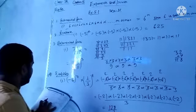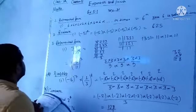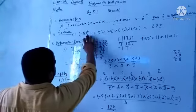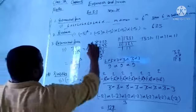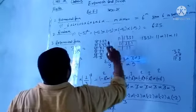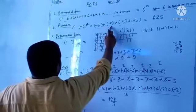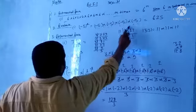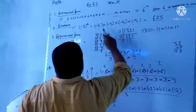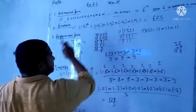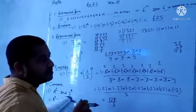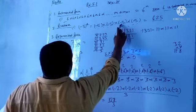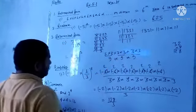Question number 2 is evaluate the following. The first question is minus 5 to power 4. So minus 5, how can we multiply it 4 times? Multiply it: 5 times 5 is 25, 25 times 25 is 625.